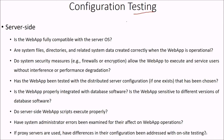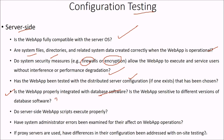In configuration testing, we address both server side and client side. On the server side, we need to answer: Is the web app fully compatible with the server OS? Are system files, directories, and related system data created correctly when the web app is operational? Do system security measures like firewalls or encryption allow the web app to execute and service users without interference or performance degradation? Has the web app been tested with the distributed server configuration chosen? Is the web app properly integrated with the database software and sensitive to different versions of it? Do server-side scripts execute properly? Have system administrator errors been examined for their effect? If proxy servers are used, have differences in their configuration been addressed with on-site testing?